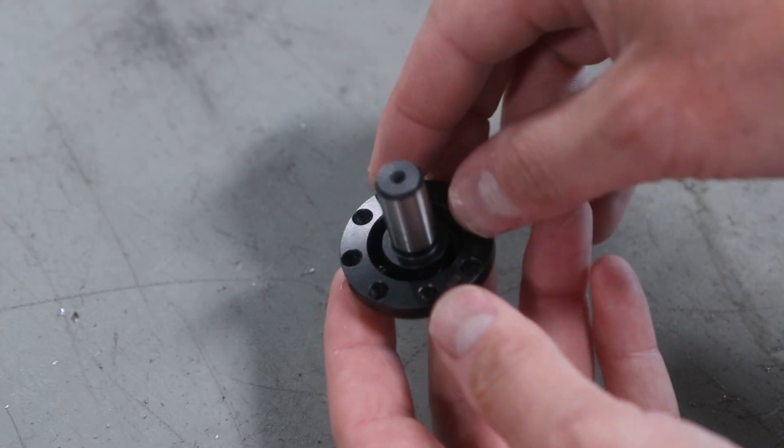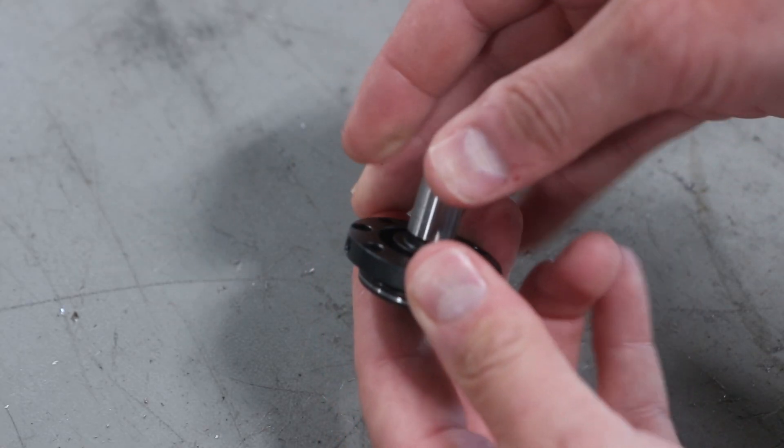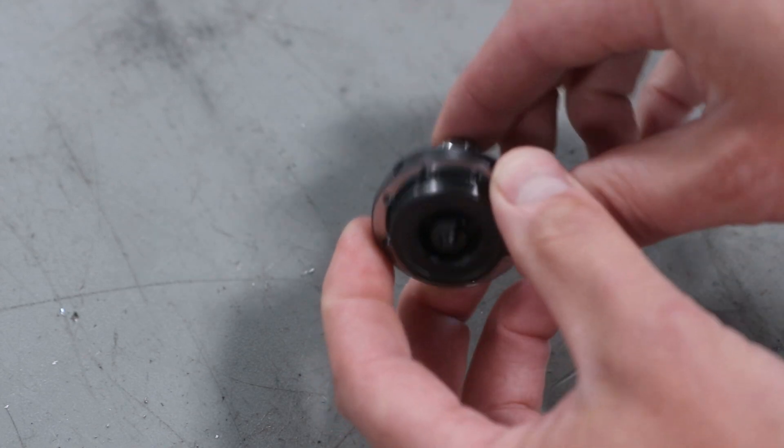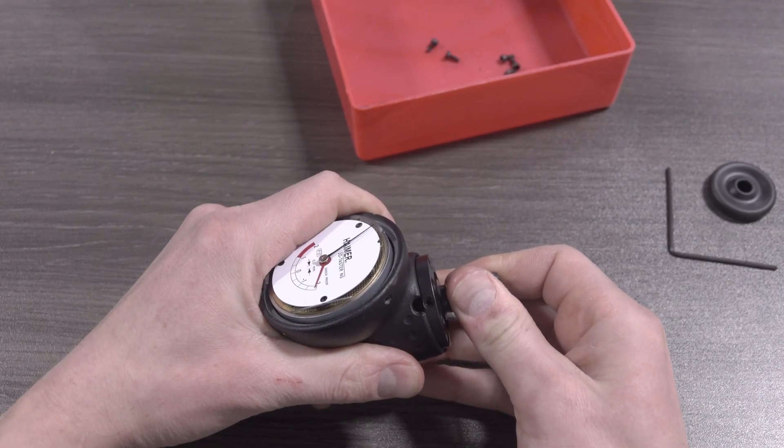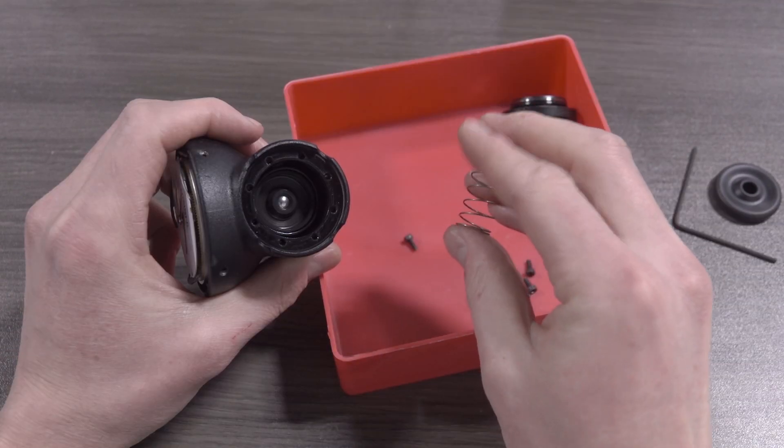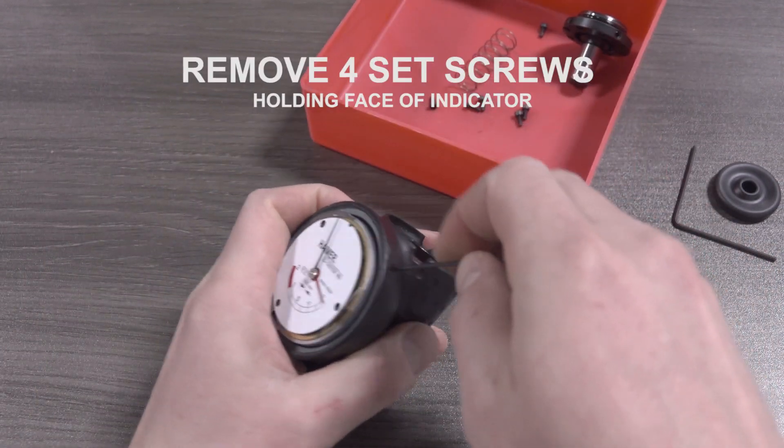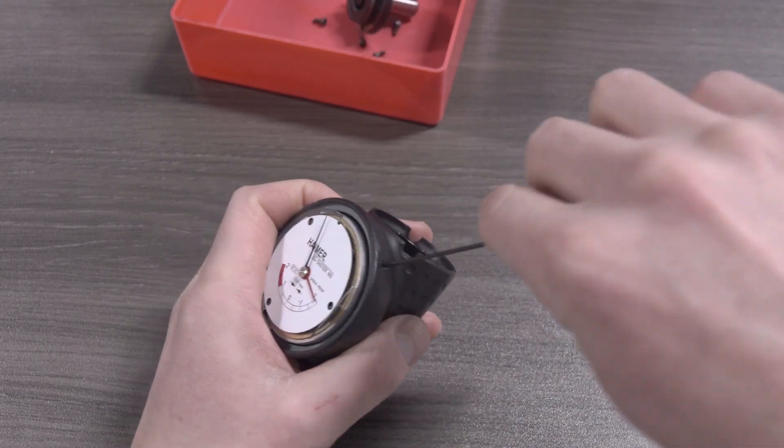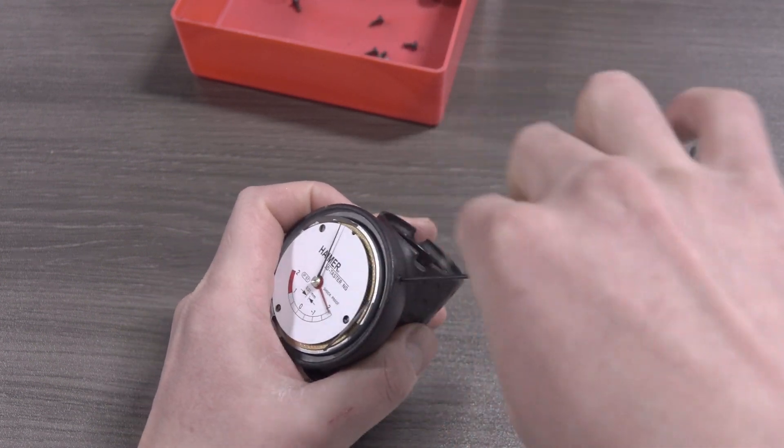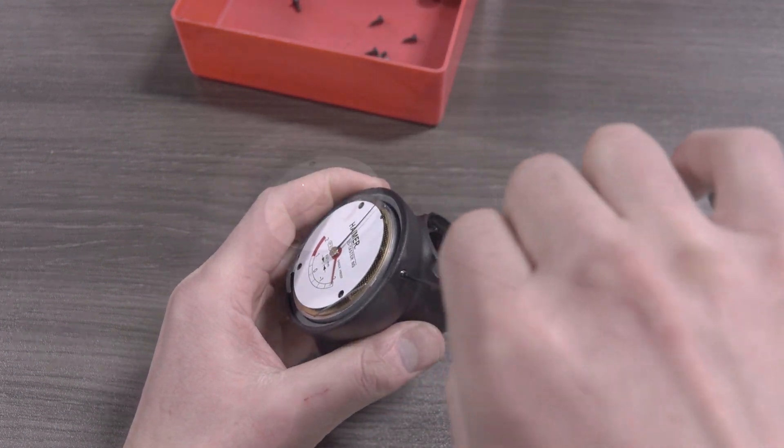After those eight screws are removed, you do need to be careful as you're pulling this top bracket plate off of the Haimer unit. It's held in with some tension and when you do pull it out, there'll be a spring right behind it. Next up, removing the four set screws that hold the face or the dial in. These screws are very small, so I recommend backing them out just enough to remove the dial indicator face.